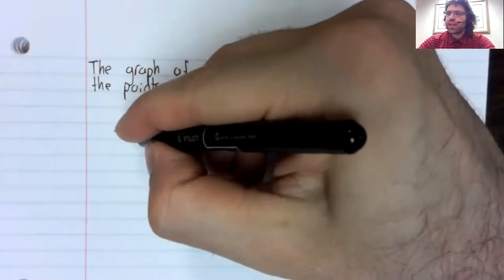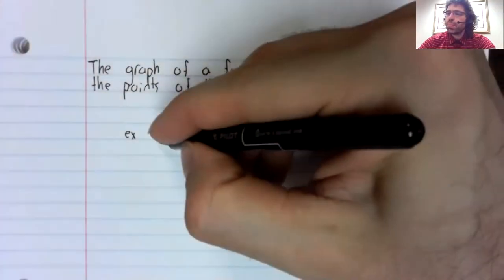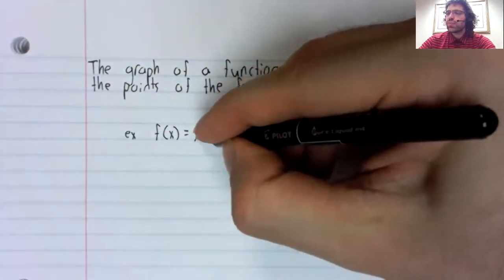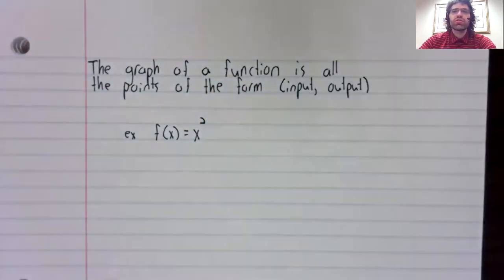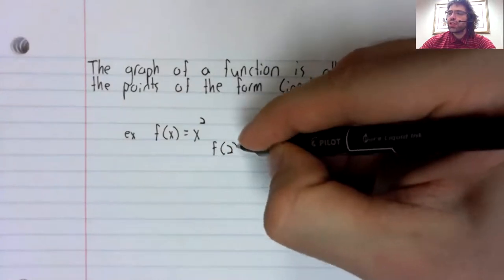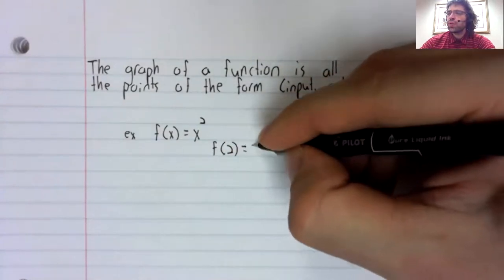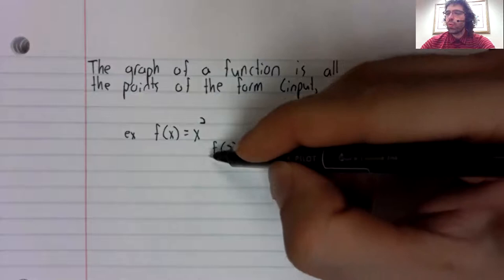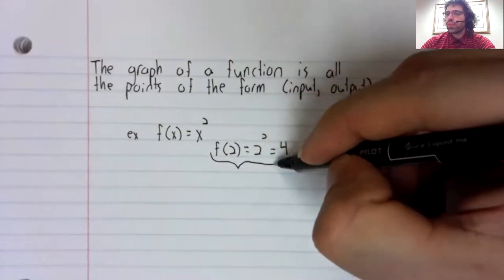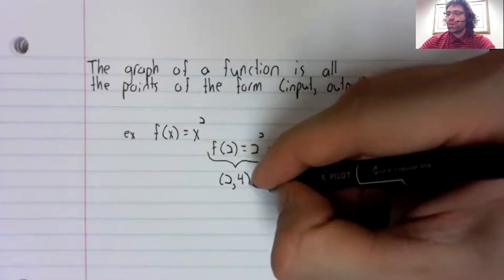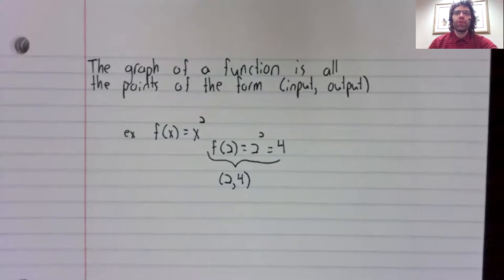So for example, f(x) = x². When your input is 2, your output is 4. So if you're going to graph this, the point (2, 4) would be on the graph.